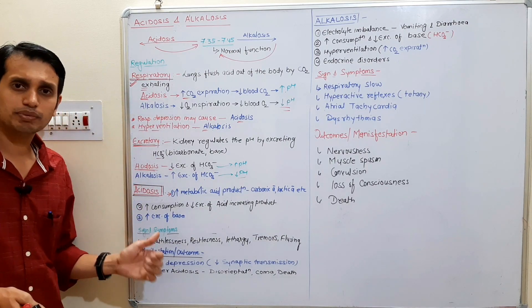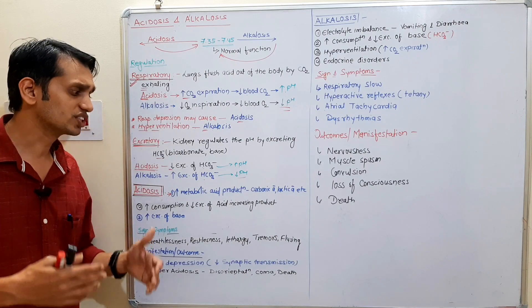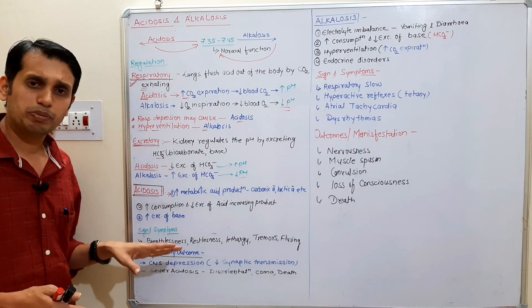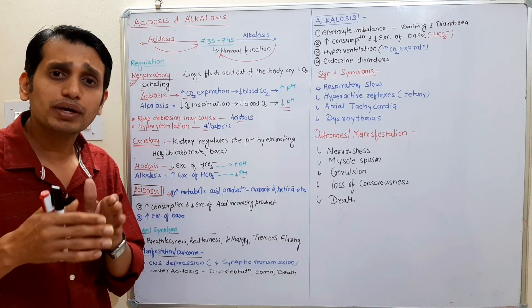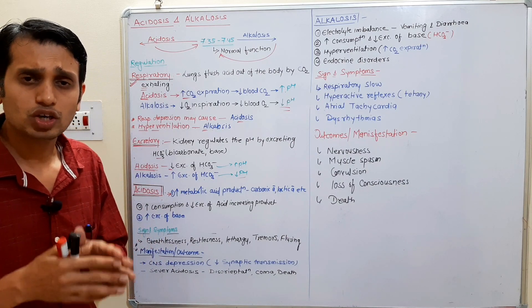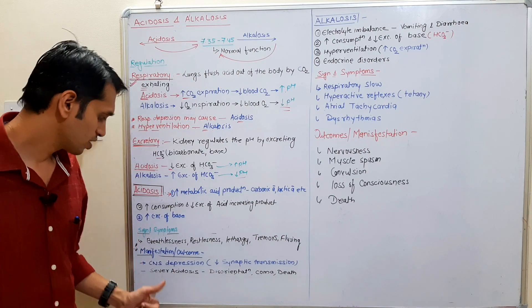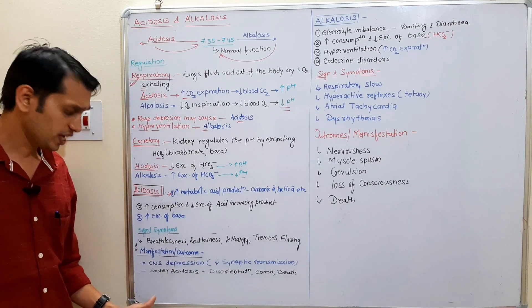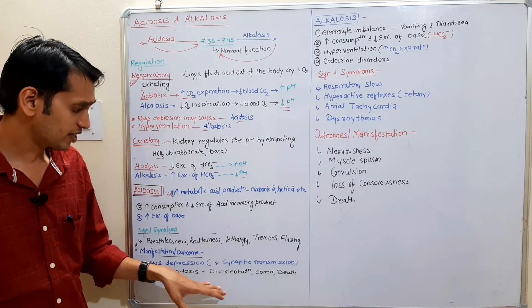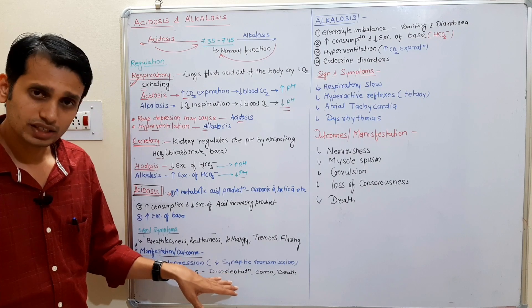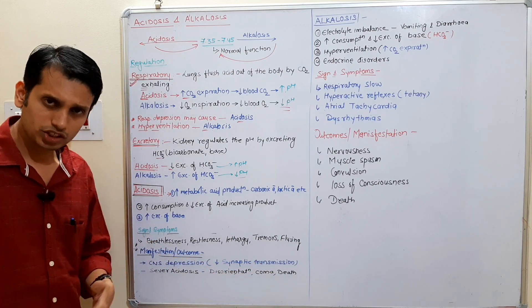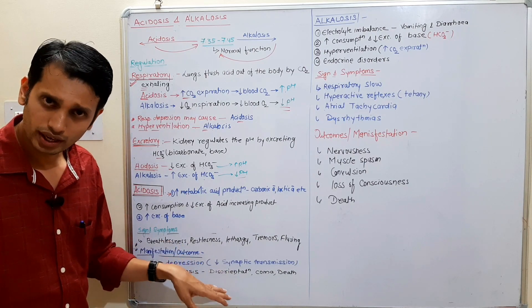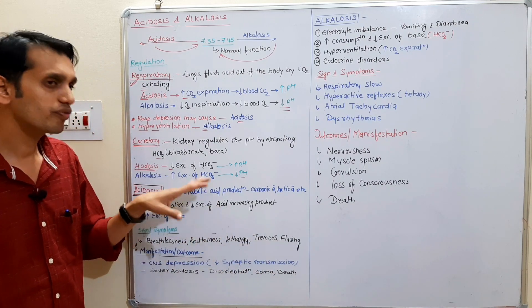The signs and symptoms of acidosis include breathlessness, restlessness, lethargy, tremors, and flushing. Regarding outcomes and manifestations: chronic acidosis may cause CNS depression by decreased synaptic transmission within the neurons. Severe acidosis may lead to disorientation, coma, and death.